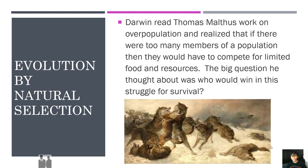We will start off the video by talking about evolution by natural selection. Darwin read Thomas Malthus's work on overpopulation and realized that there are too many members of a population and they would have to compete for limited food and resources.